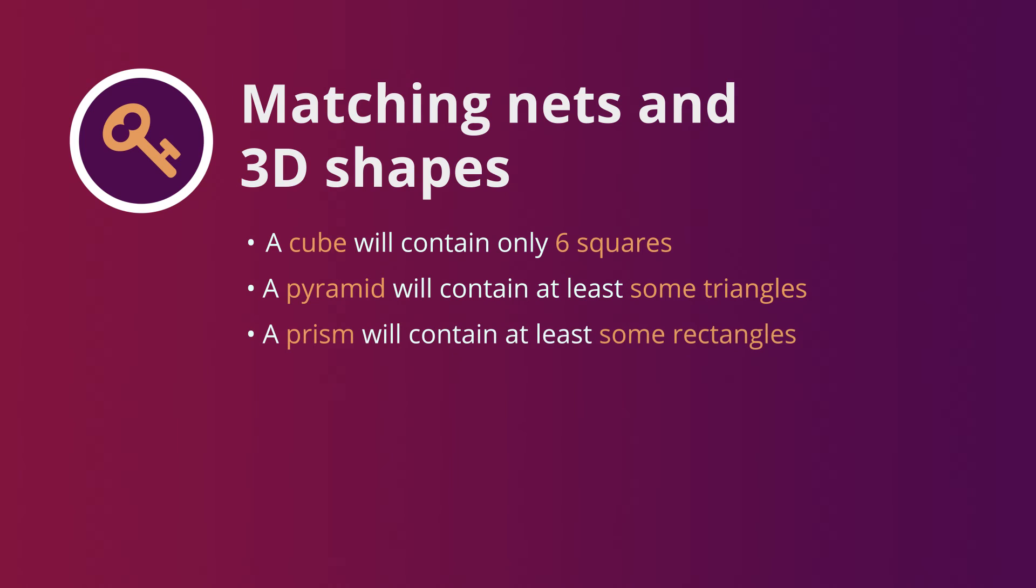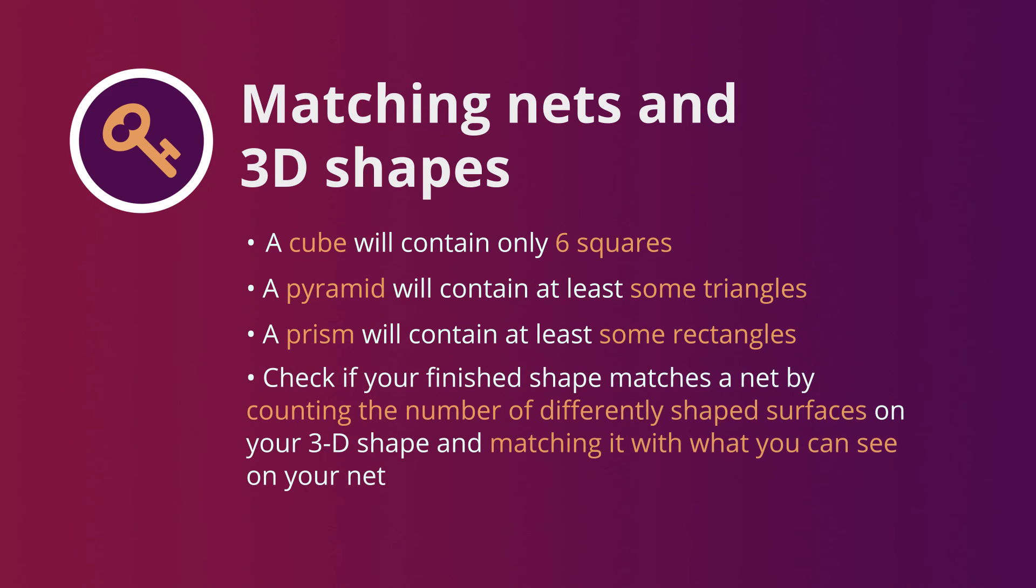A prism will contain at least some rectangles. As a guide, you can check if your finished shape matches a particular net by counting the number of differently shaped surfaces on your 3D shape and matching it with what you can see on your net.